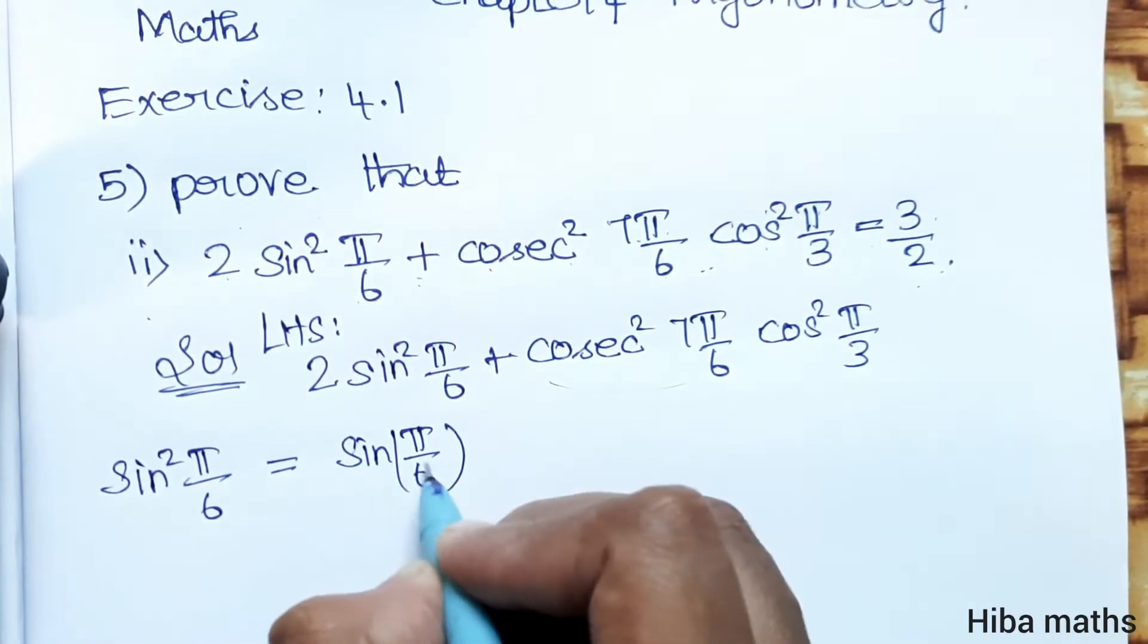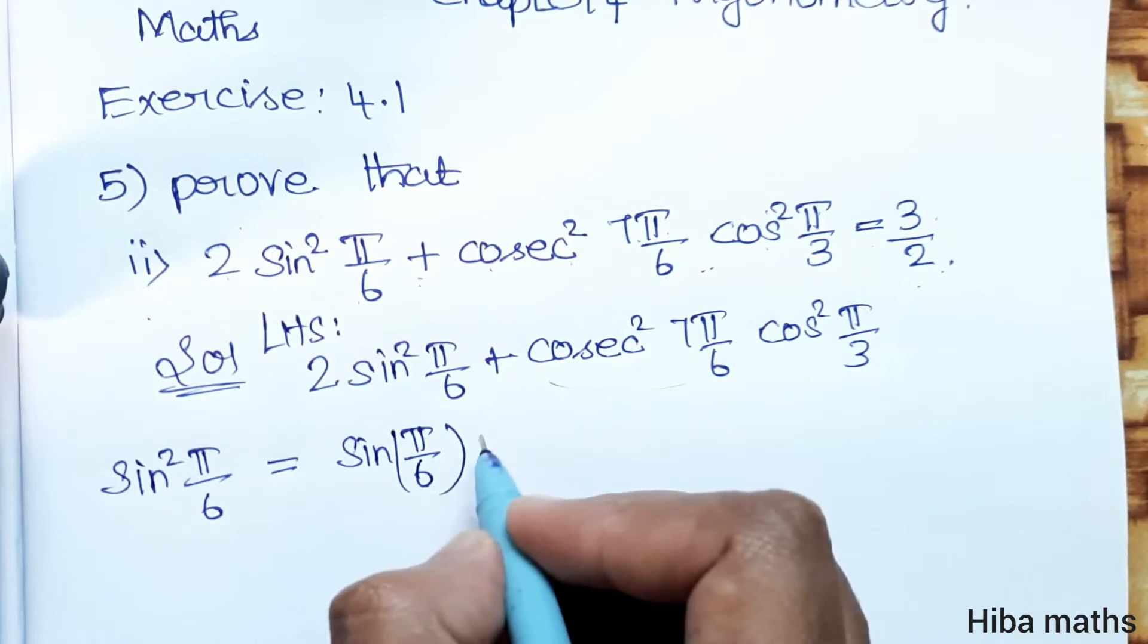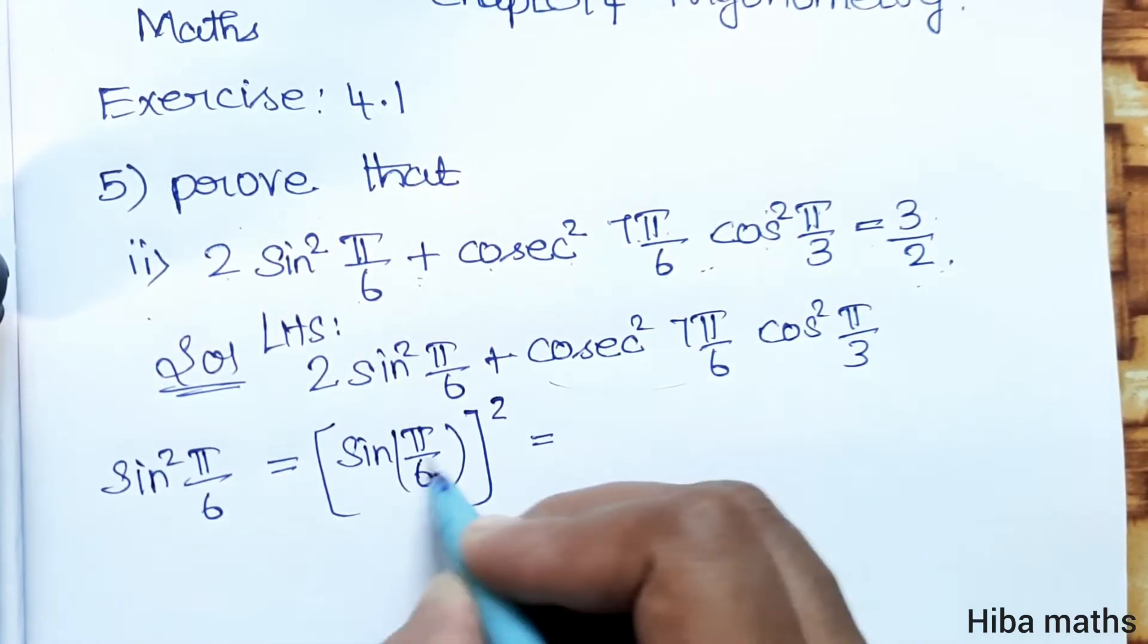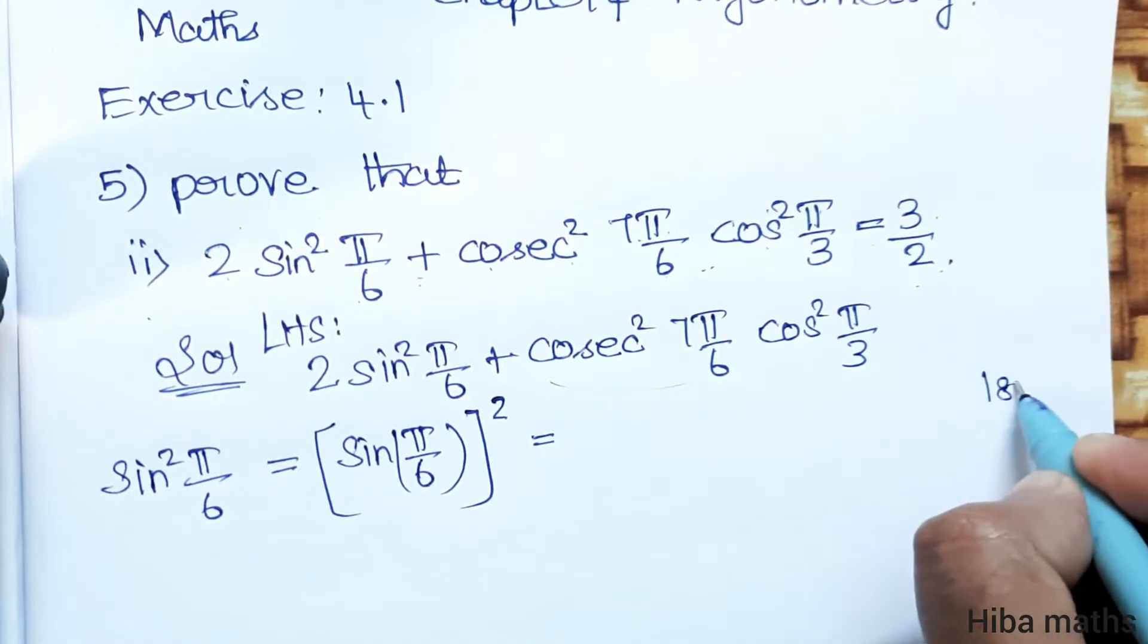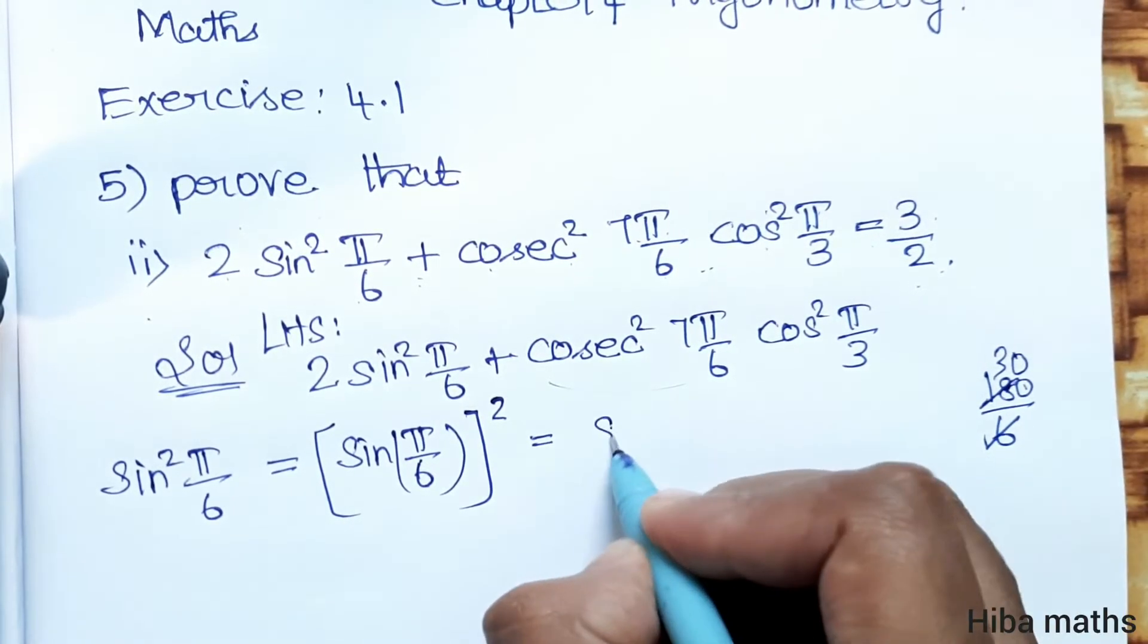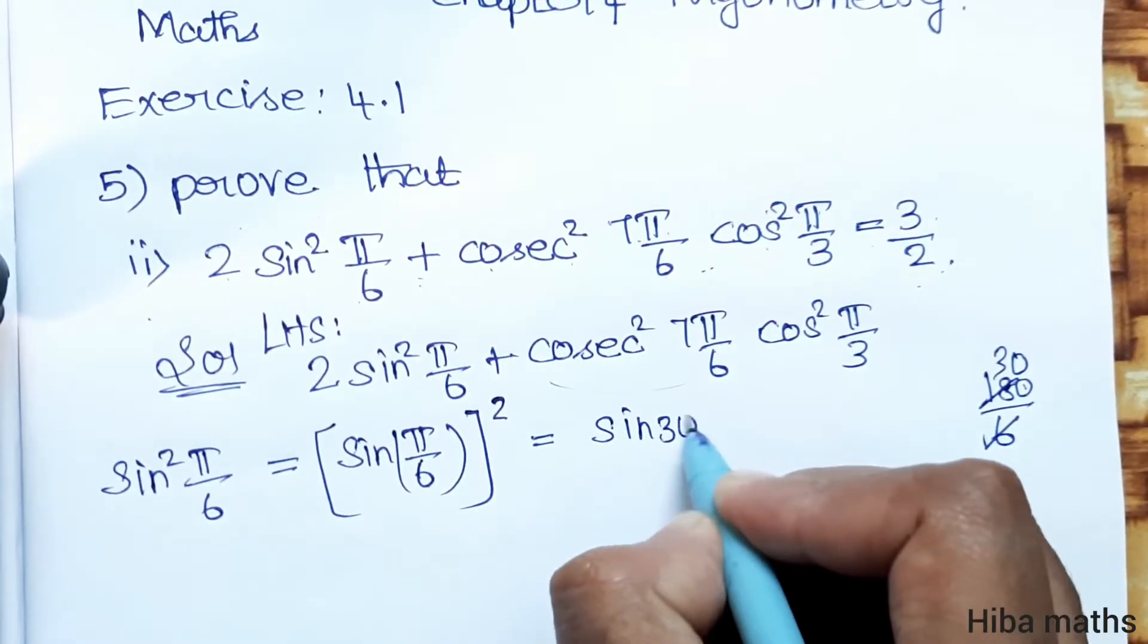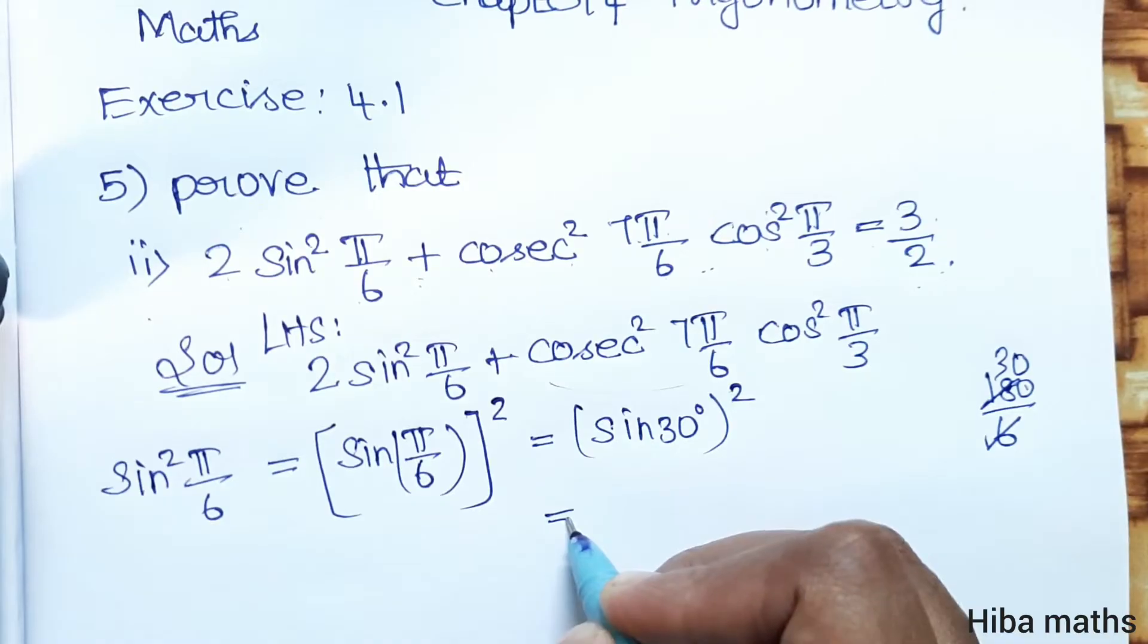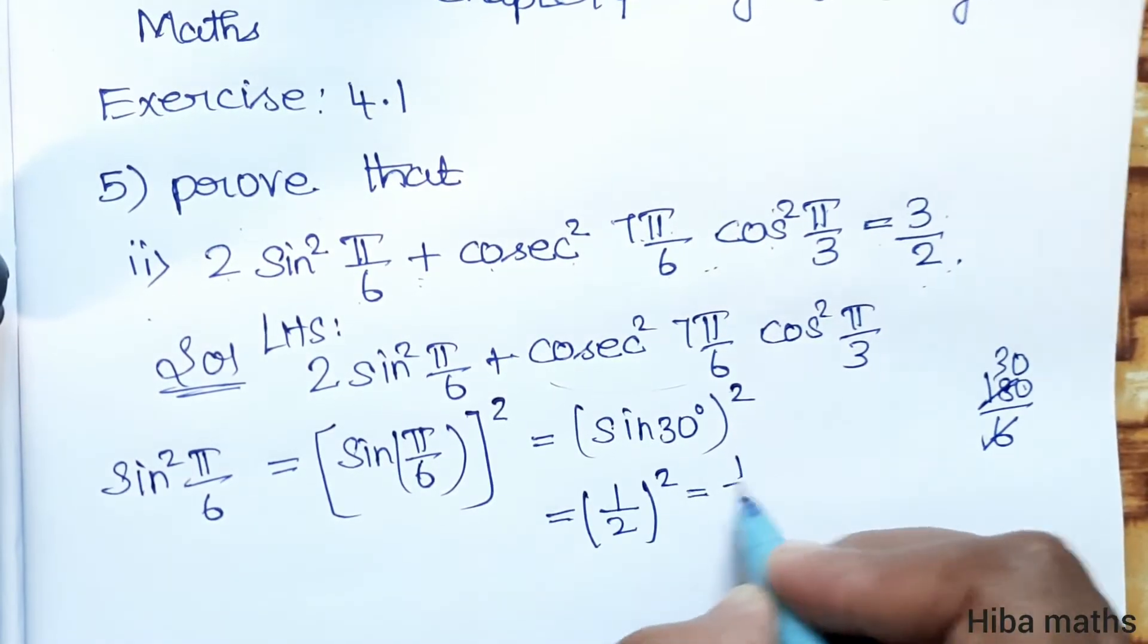Sin²(π/6) equals (sin π/6)². Sin π/6 means 180/6, which is 30 degrees. So (sin 30°)². Sin 30° value is 1/2, so (1/2)² equals 1/4.